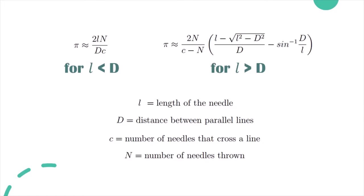Again, this is a weird place for pi to show up, and this method is thought to be the first that solves a geometrical probability problem.